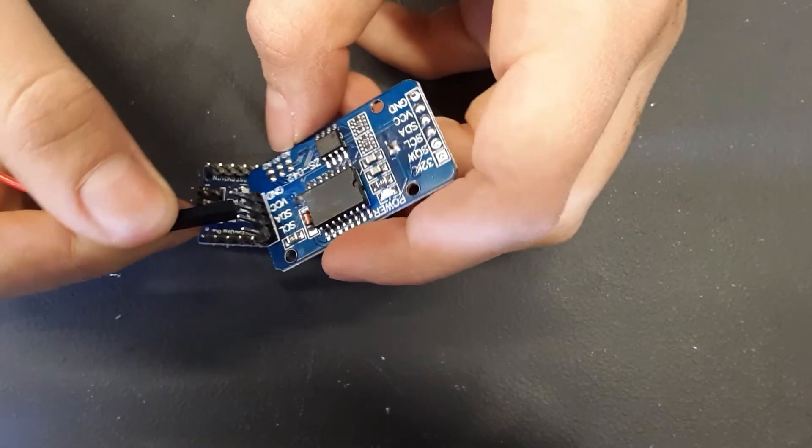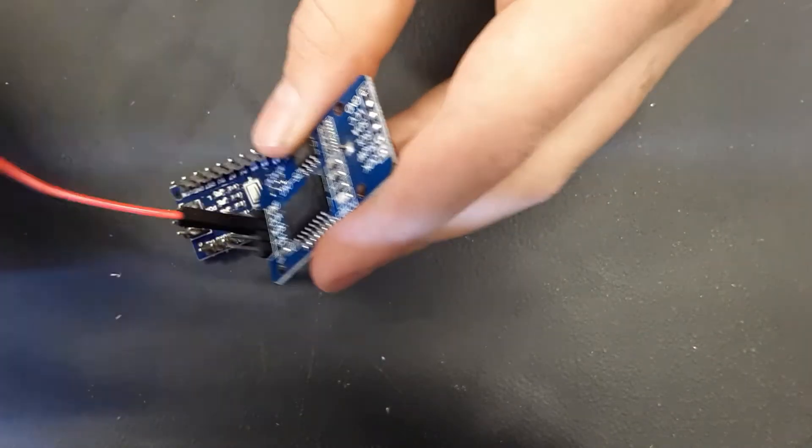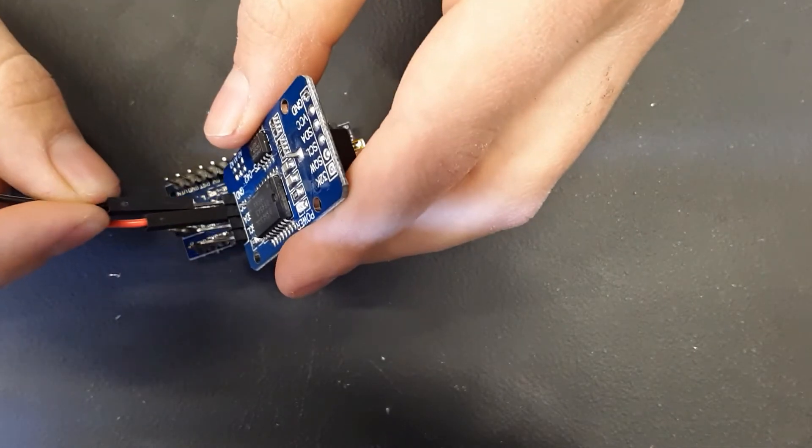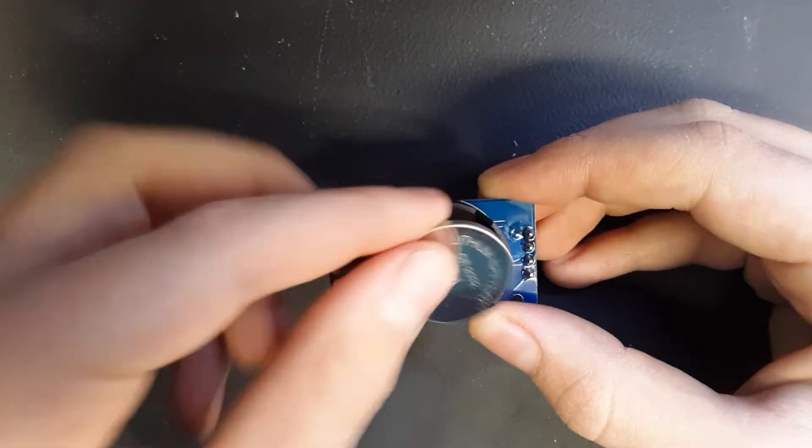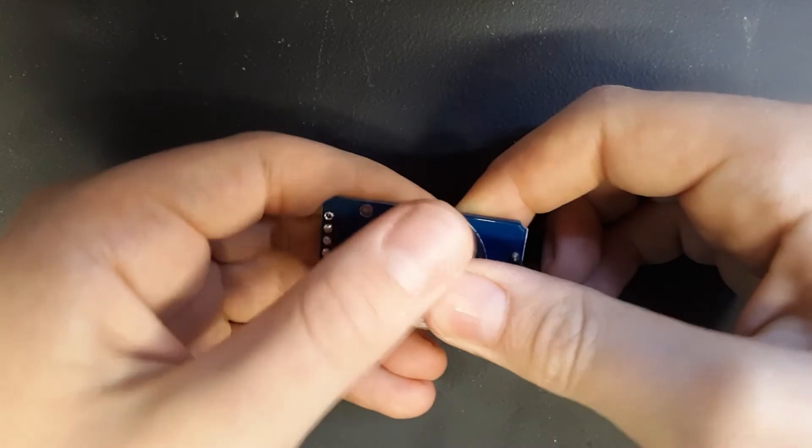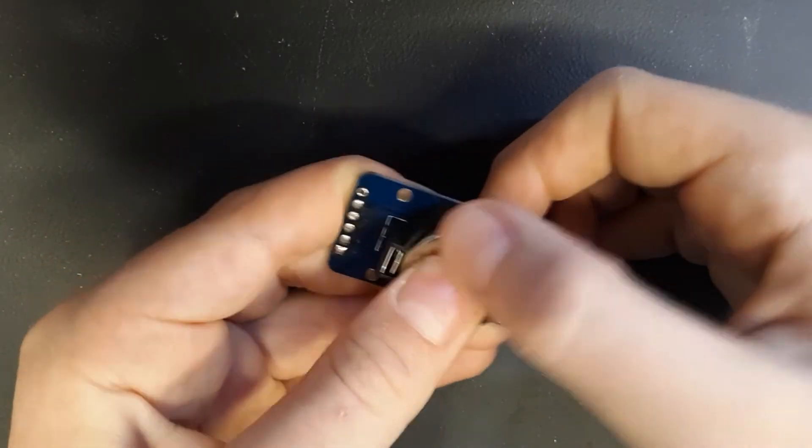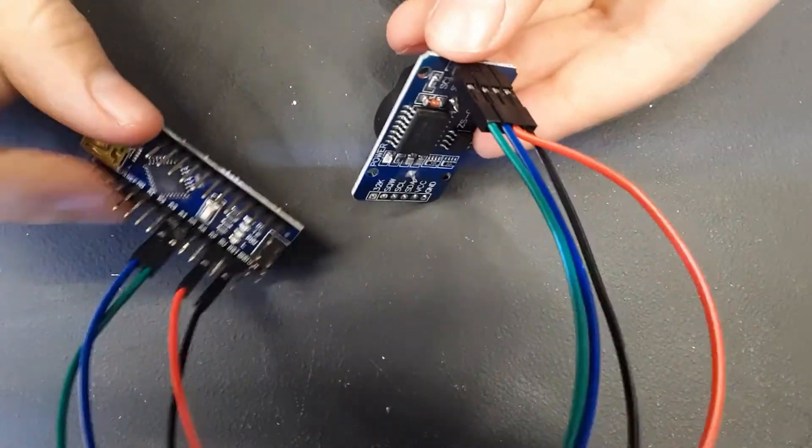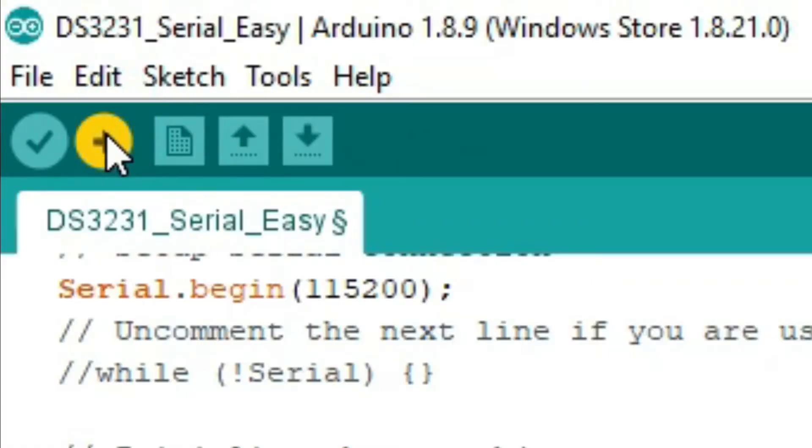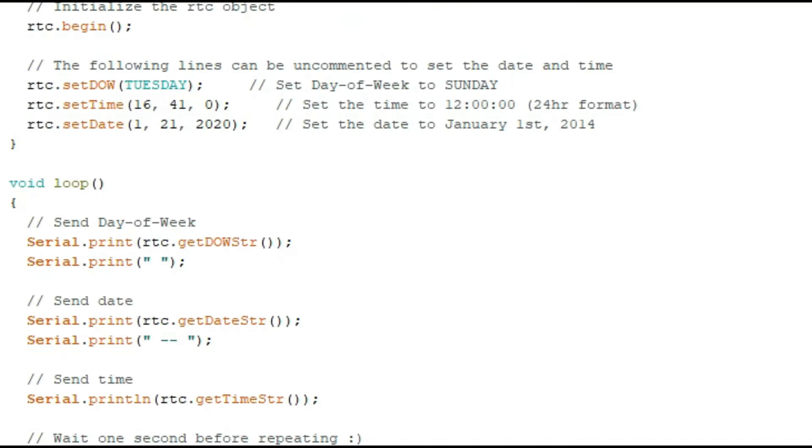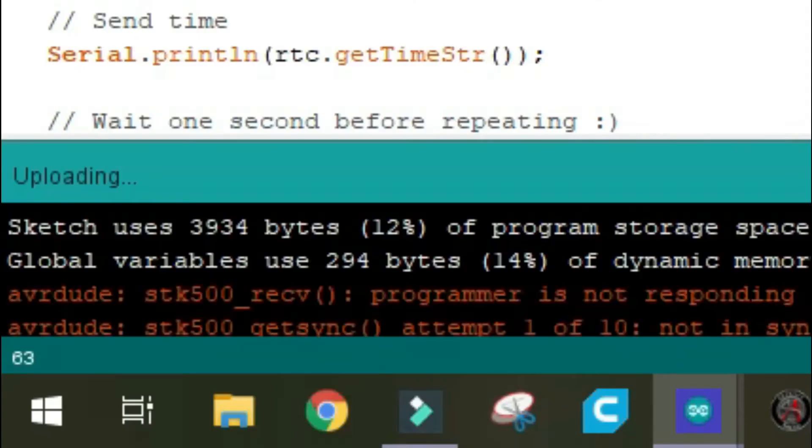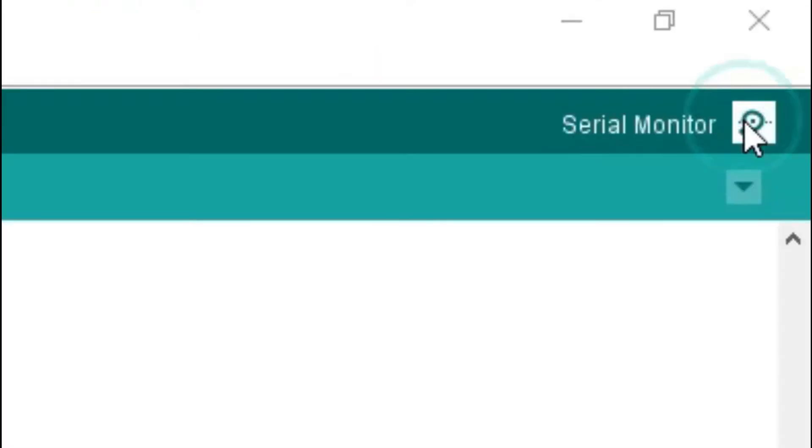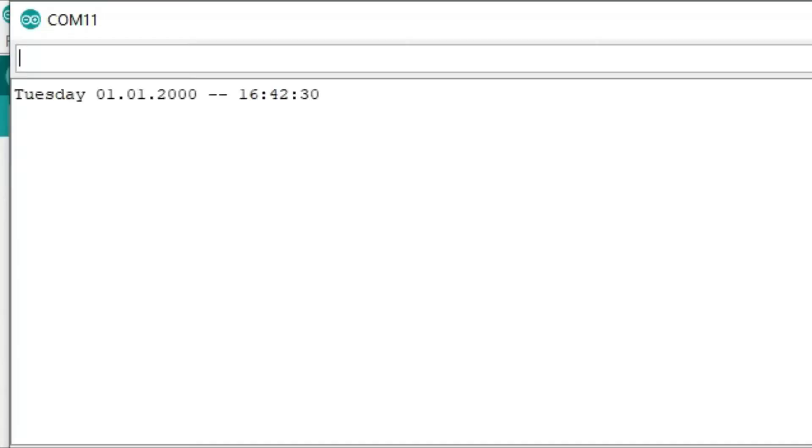I started off by hooking up a DS3231 real-time clock module through the i2c protocol. The real-time clock module or RTC is a chip that once set can report the current time to the Arduino. Once the RTC was hooked up, I uploaded a simple piece of code to the Arduino that sets the time on the RTC. After the code was uploaded, I opened the serial monitor and saw that the RTC was displaying the correct time.